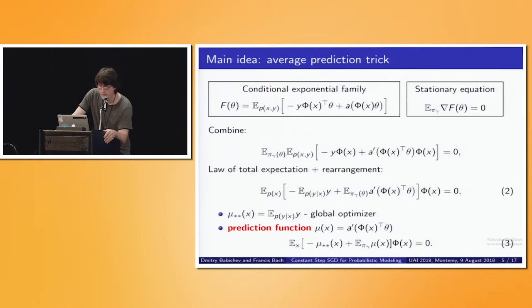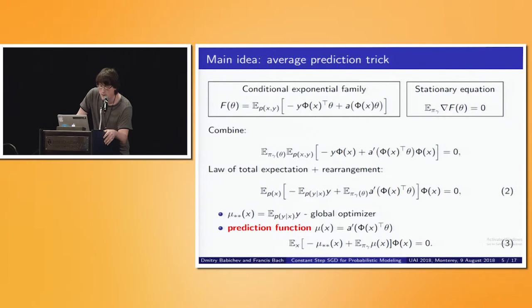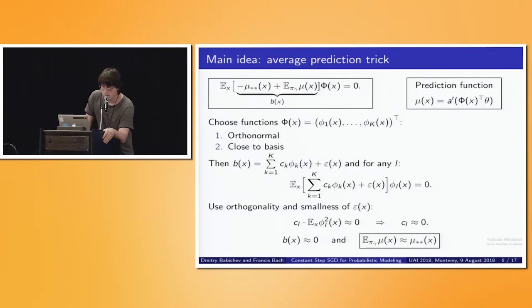This leads to the main idea, which I call the 'averaging prediction trick.' Let's look again at our negative log-likelihood and its stationary equation. We want to combine them by substituting the first equation into the second, then use the law of total expectation and rearrange the expectations over data and over the parameter to get equation number two. We introduce notation: mu-star-star is the conditional expectation of y, and we introduce a prediction function mu(x). Our equation can then be rewritten in the form of equation number three. We want to show that a function b(x) is close to zero.